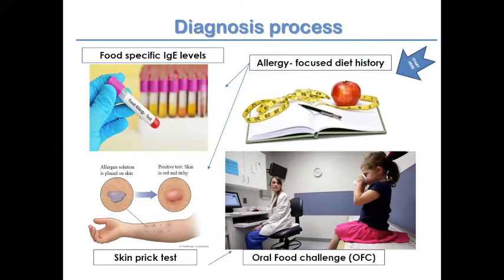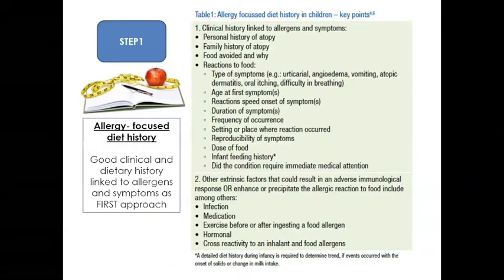Where does one start? When a patient reports multiple food allergies, the obvious starting point is getting a good allergy-focused diet history, which helps determine what foods to test for food-specific IgE levels, skin prick tests, and oral food challenges. Step one is the allergy-focused diet history — a good clinical and diet history linking allergens and symptoms.